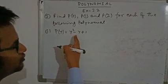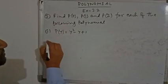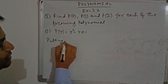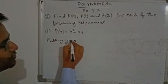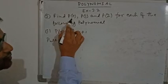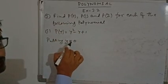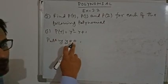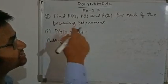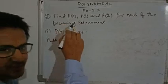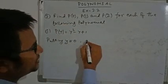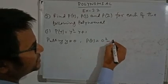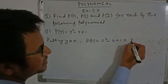P(Y) equals 2Y squared minus Y plus 1. First we have to find P(0), so we put Y equals 0. We replace this Y by 0 — because it is asked in the equation P(0), that's why. So P(0) equals 0 squared minus 0 plus 1, which equals 1.